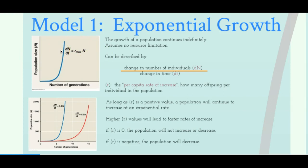Using this equation we're able to calculate exponential growth. On the AP test, you'll likely be given some of these factors and asked to calculate one or construct a graph. As long as r is a positive value, the population will continue to increase at an exponential rate — even if r equals 0.1. Here we have a comparison: when r equals 1 the population growth rate is much higher and the population increases faster. If r is a negative value, the population will decrease.